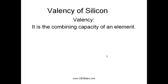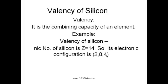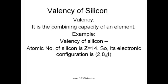Combining capacity, that is the valency, is generally determined with the help of number of valence electrons present in the outermost shell. Let us start with finding the valency of silicon. So, in order to find out the valency of a particular element, we require the atomic number and its electronic configuration.